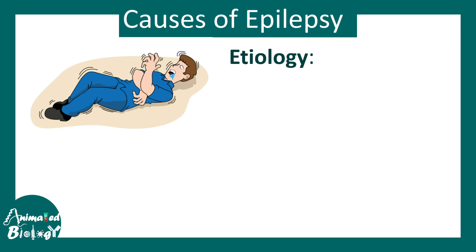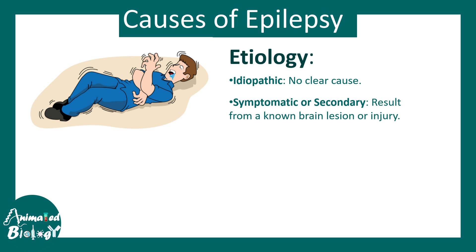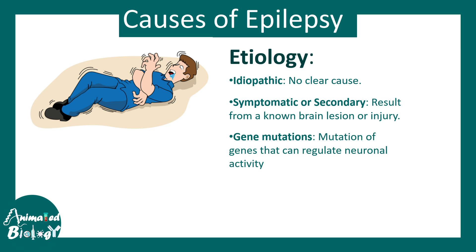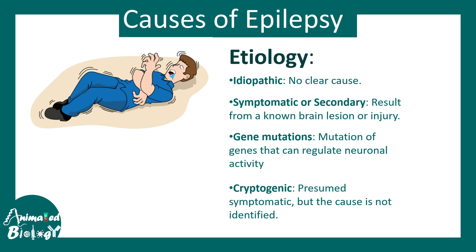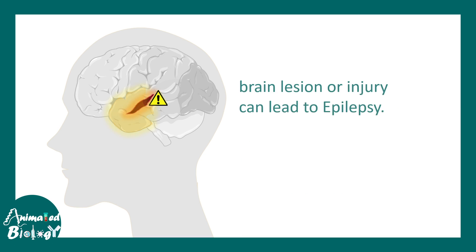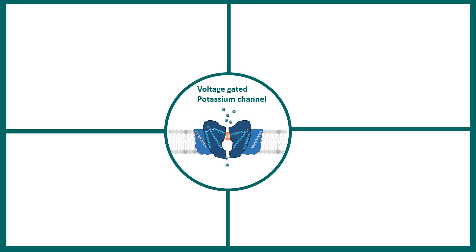The etiology of epilepsy could be idiopathic, meaning the clear cause is not known; symptomatic or secondary, for example epilepsy associated with brain injury or gene mutations; or cryptogenic, meaning it is presumed symptomatic but the cause is still not identified. Several brain lesions such as brain injury and hypoxic injury can possibly lead to epilepsy.